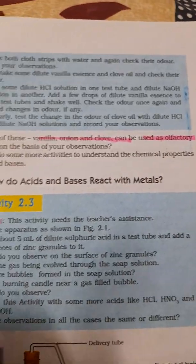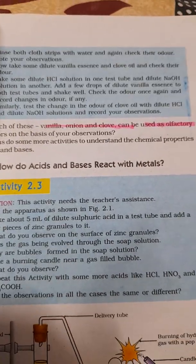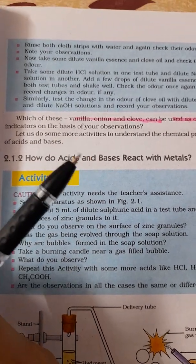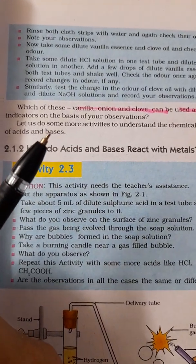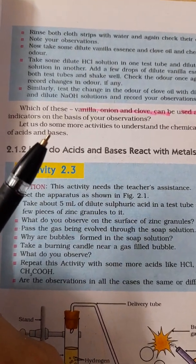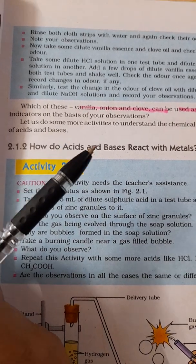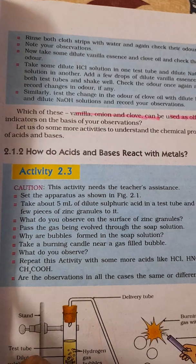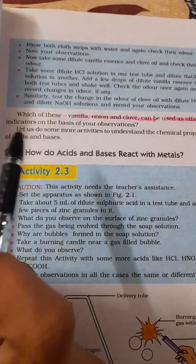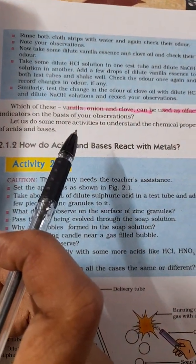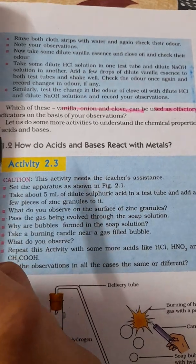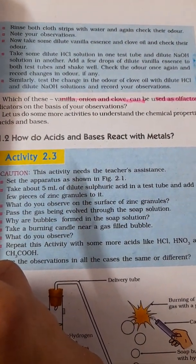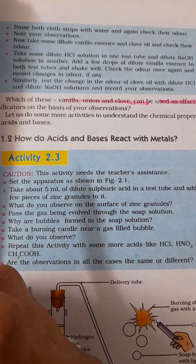Vanilla, onion, and clove are all used as olfactory indicators — you can try these at home and just smell to see the change in odor. Out of these, you can detect the change in odor itself in acidic or basic media.